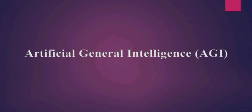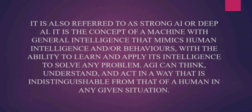Next, artificial general intelligence, also referred to as strong AI or deep AI, is the concept of a machine with general intelligence that mimics human intelligence and behaviors, with the ability to learn and apply its intelligence to solve any problem. AGI can think, understand, and act in a way that is indistinguishable from a human in any given situation. However, AI researchers and scientists have not yet achieved strong AI.